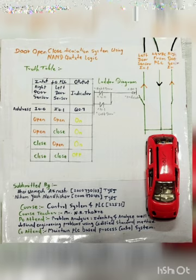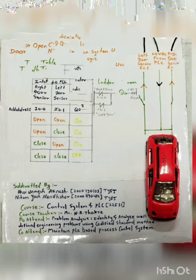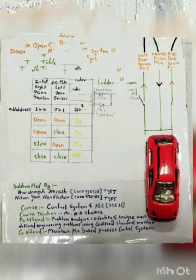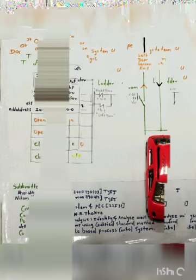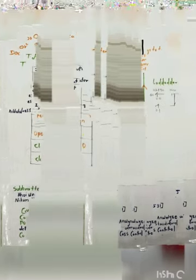The name of the course is Control System and PLC. The title of the project is door open close indication system using NAND gate logic. The course outcome attained by this project is to identify and analyse engineering projects using a modified standard method. In this project we use a car — basically with a sensor to detect whether the door is open or closed. If both doors are open, the indicator will be on. If one door is closed and one is open, the indicator will be on. If both doors are closed, the indicator will be off.